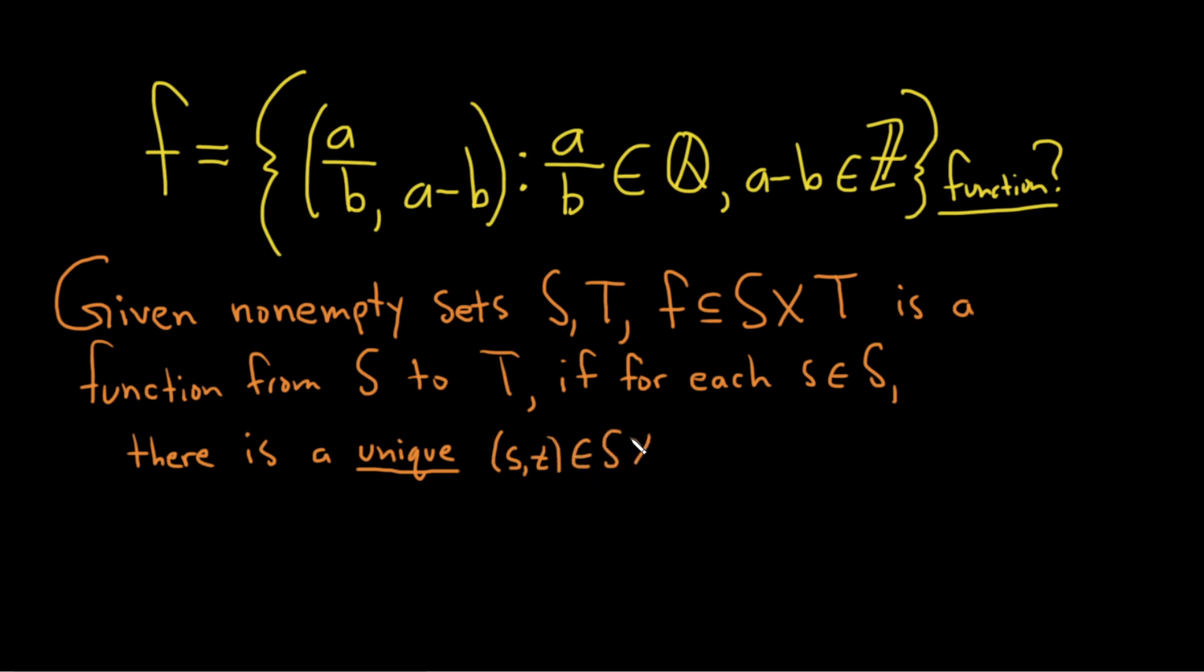And as a side note, the notation we use here is f from s to t. S is called the domain and t is called the codomain. And basically for each element in the domain, we have to have a unique element in the codomain.